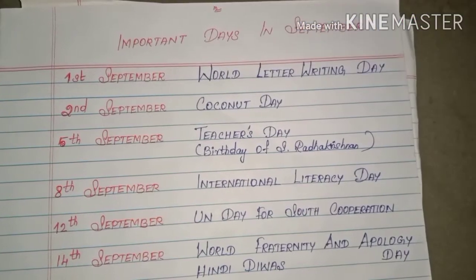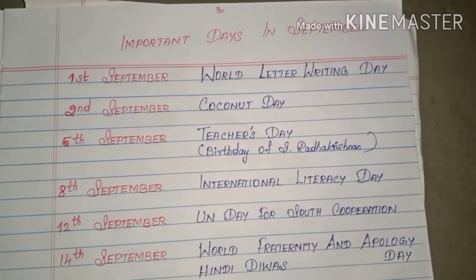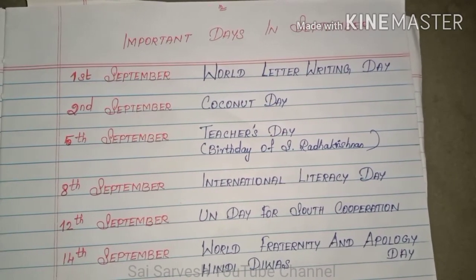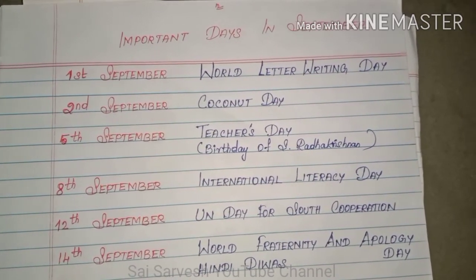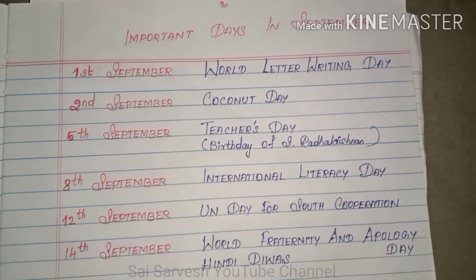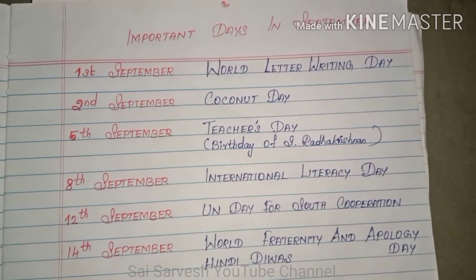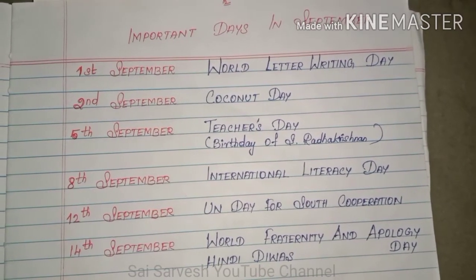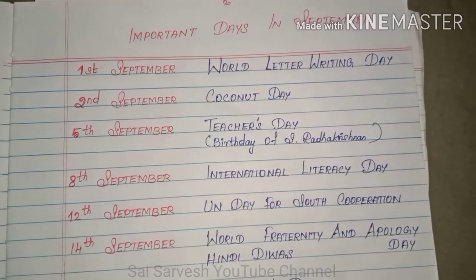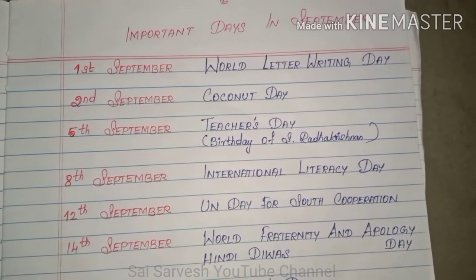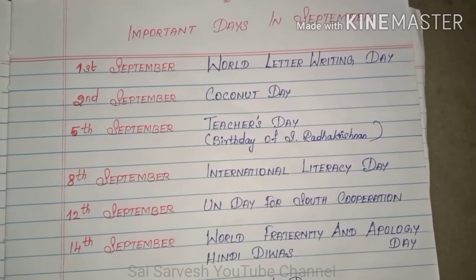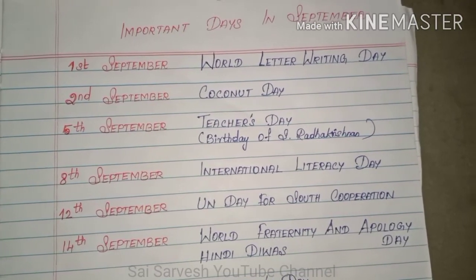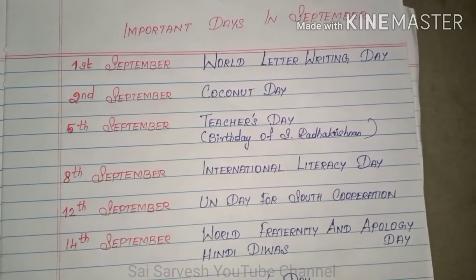Welcome to SciServesh YouTube channel. In this video we are going to discuss important dates and days in the month of September. 1st September: World Letter Writing Day. 2nd September: Coconut Day. 5th September: Teachers Day — birthday of S. Radhakrishnan, second former President of India.